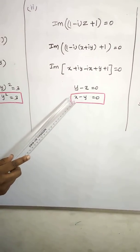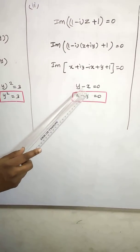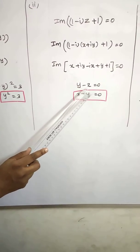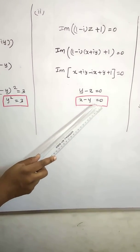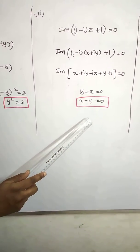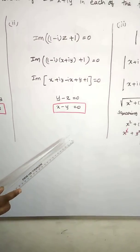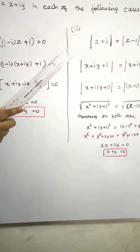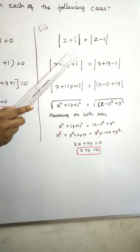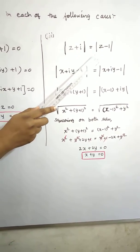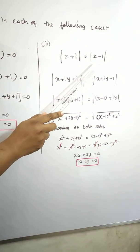Taking the imaginary part: iy minus ix gives imaginary part as y minus x equals 0. The book's answer has sign changed, so x minus y equals 0. Next is the third subdivision: modulus of z plus i equals modulus of z minus 1.